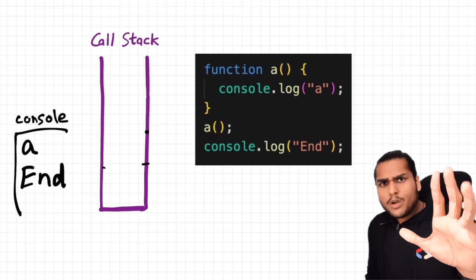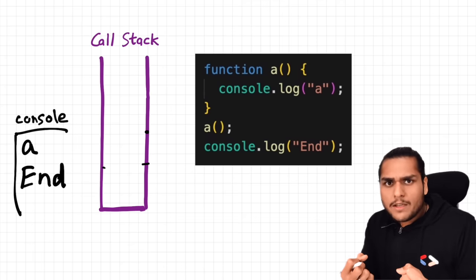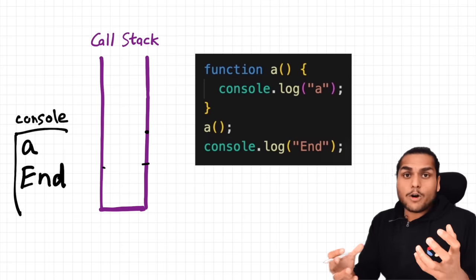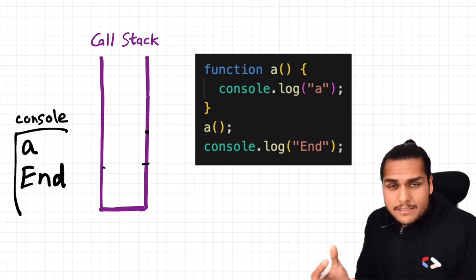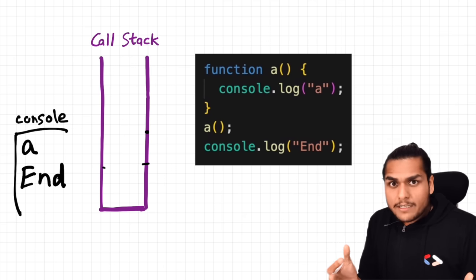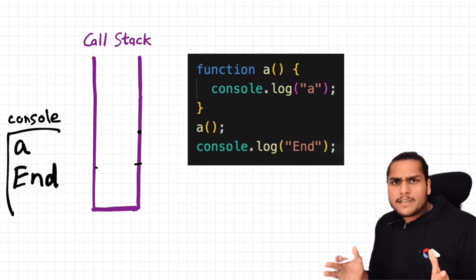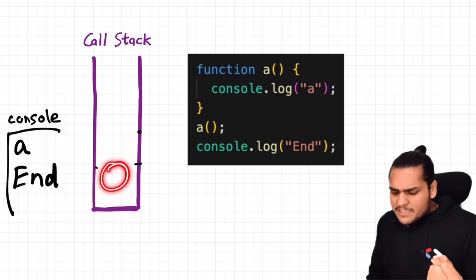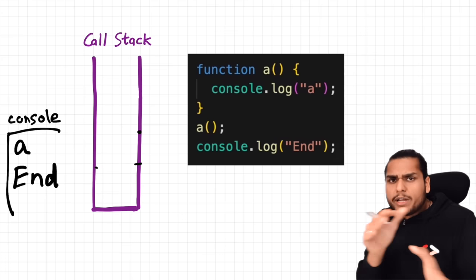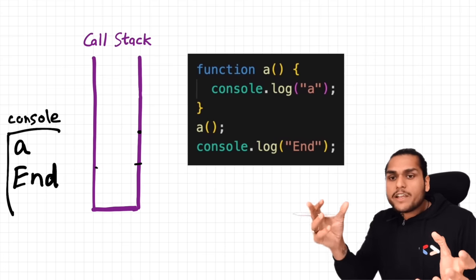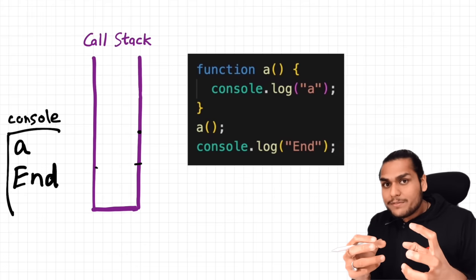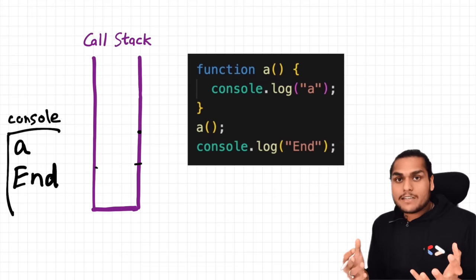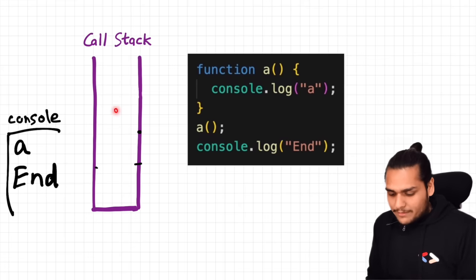But hold on — what if we need to wait for something? What if we have a program which needs to run after five seconds? We cannot do that, because whatever comes inside the call stack is automatically quickly executed. If you give it a script and say execute five seconds later, it cannot do that because it does not have a timer. This call stack does not have a timer.